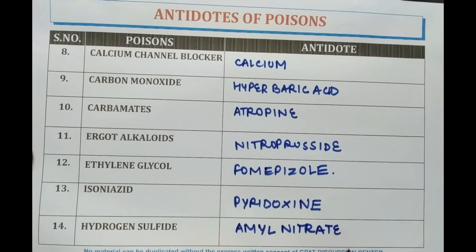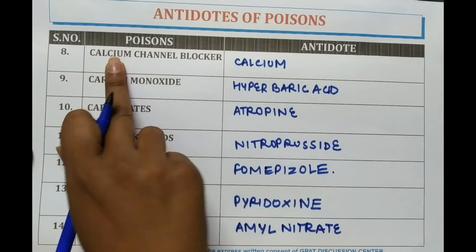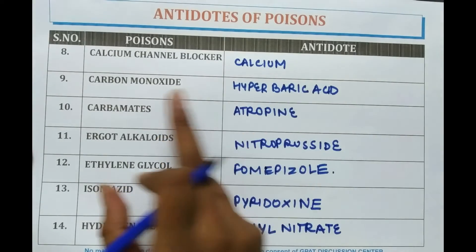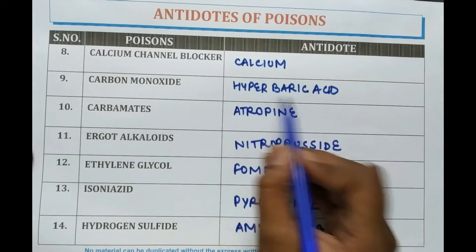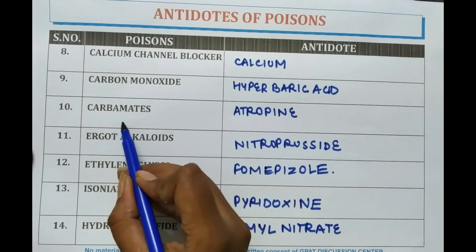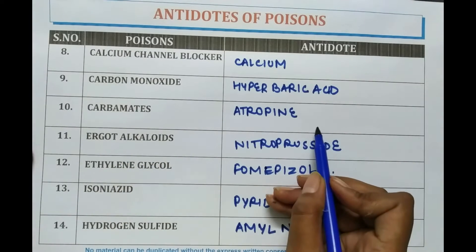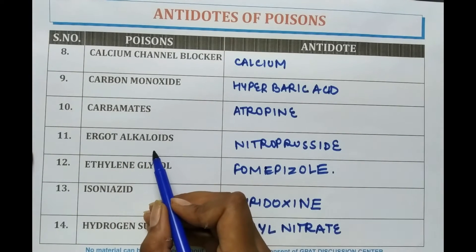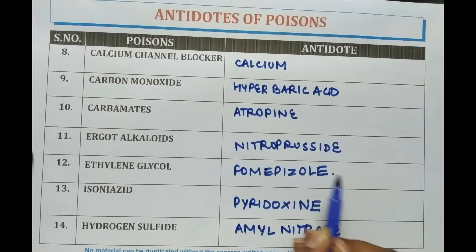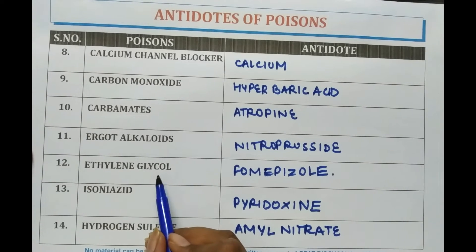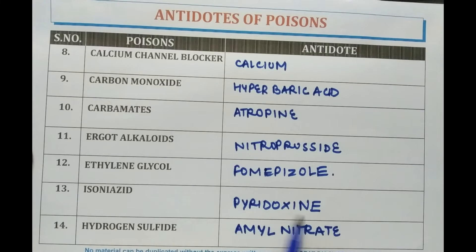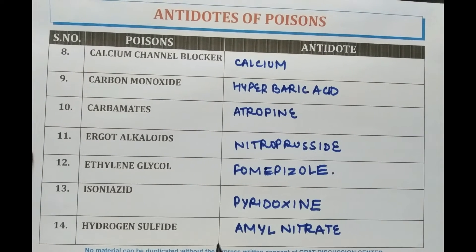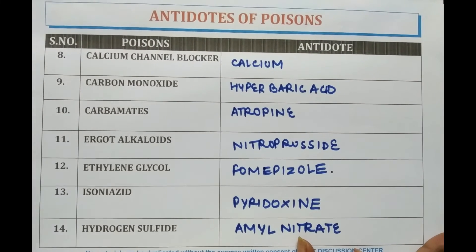Let's revise: For calcium channel blockers, calcium is given. For carbon monoxide poisoning, hyperbaric oxygen is given. For carbamates, atropine is given. For ergot alkaloid poisoning, nitroprusside is given. For ethylene glycol, Fomepizole is provided. For isoniazid poisoning, pyridoxine is given. For hydrogen sulfide, amyl nitrate is given.